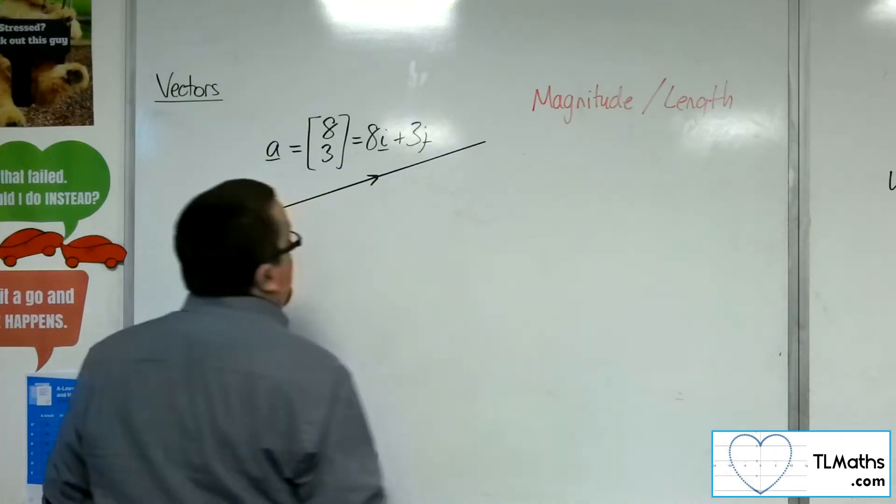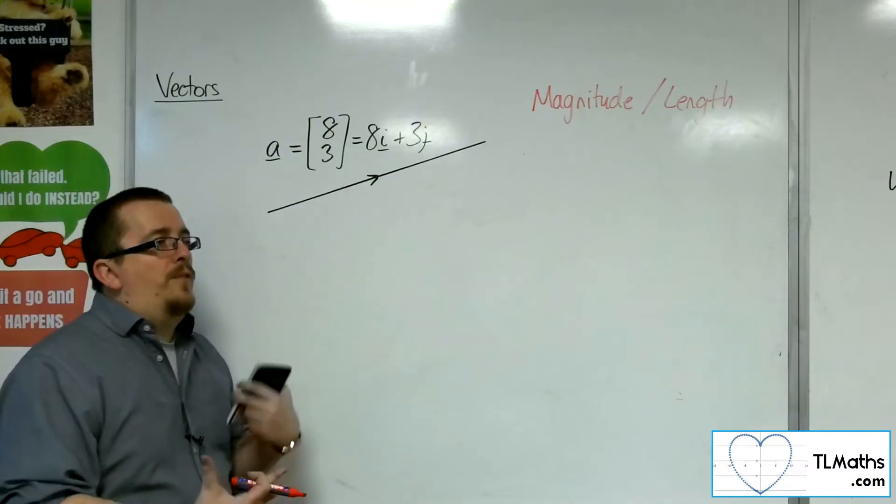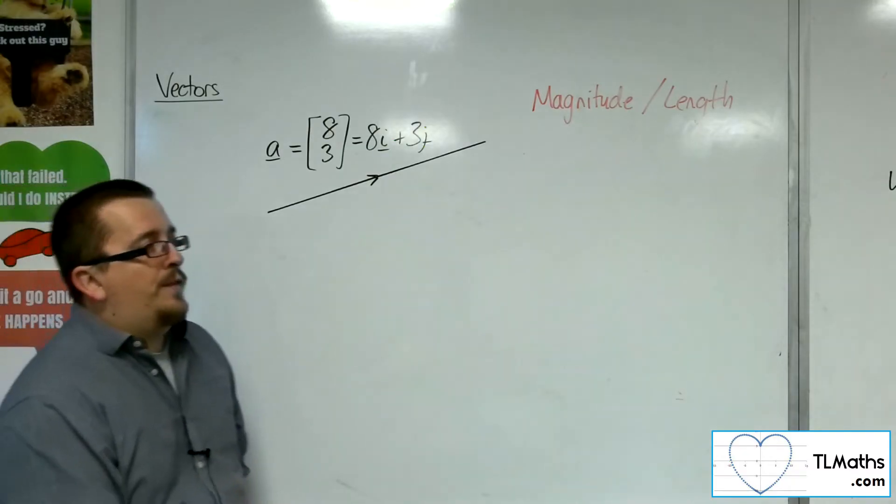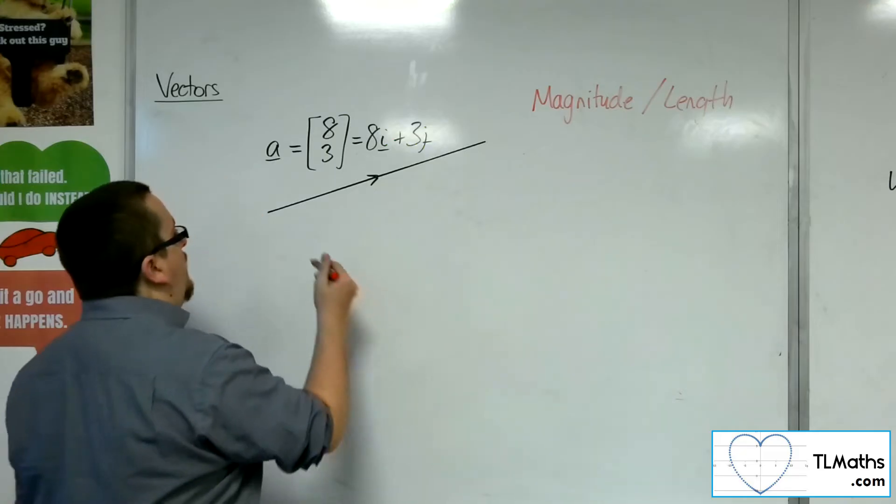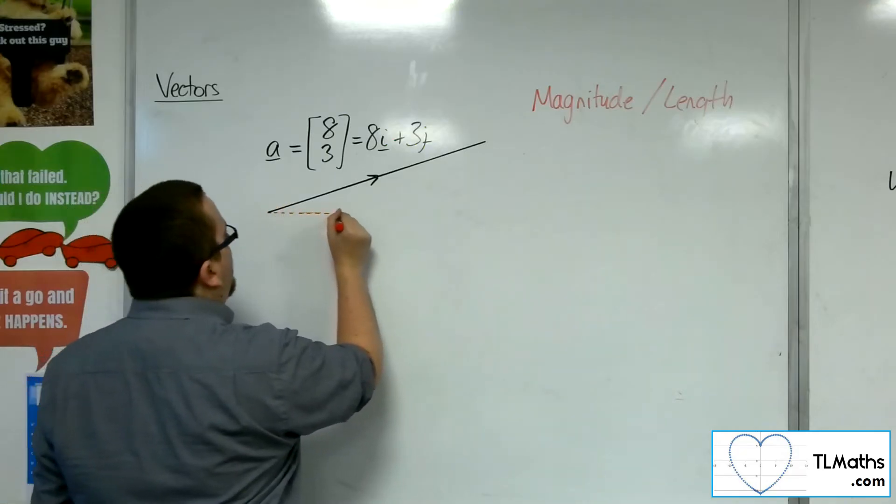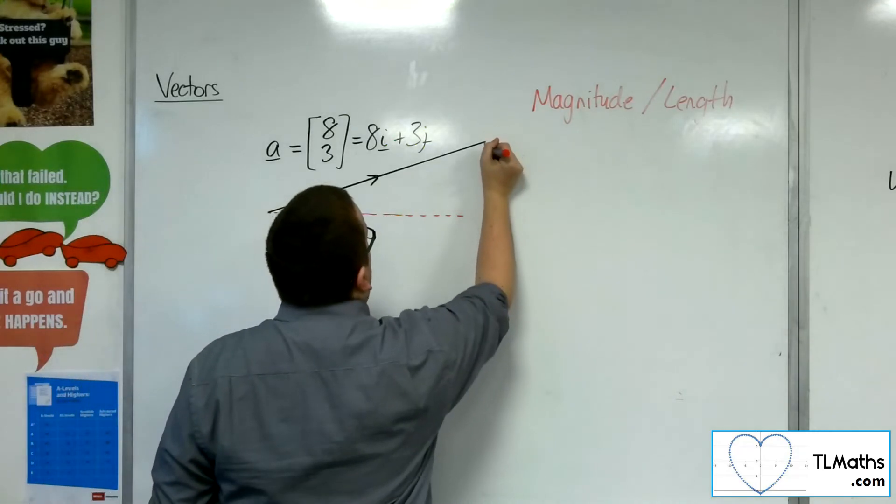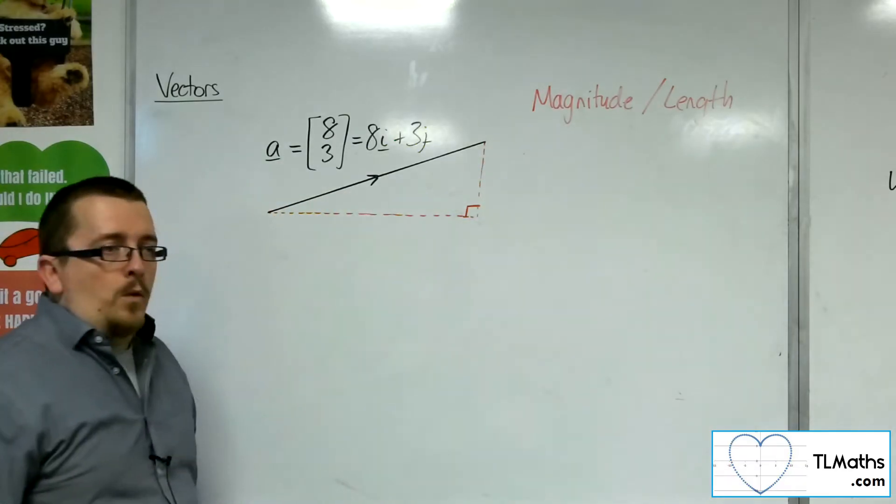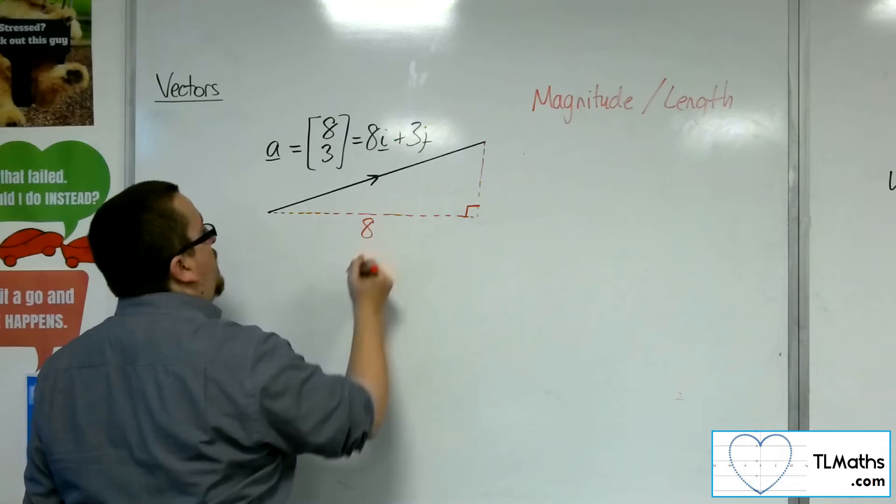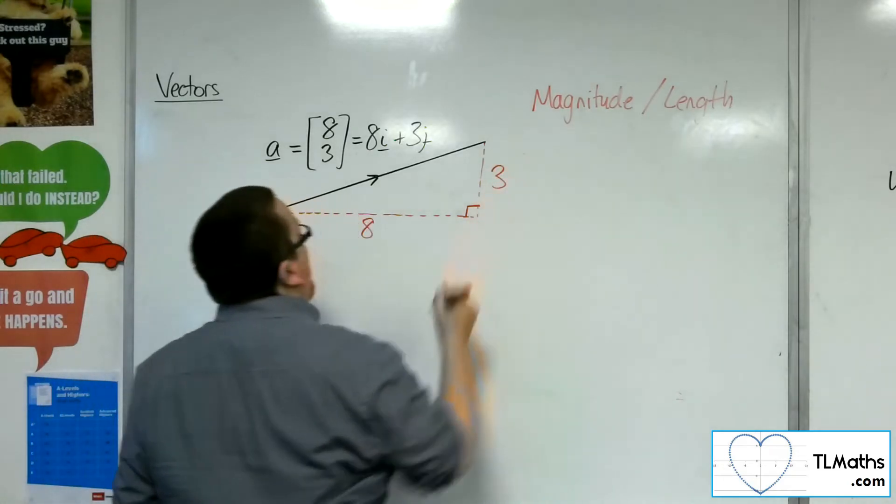So how could I do that? Well, what you need to think about with vectors is that because you've got this instruction about going 8 along the x-axis, 3 up the y-axis, you can always consider a vector as a right-angled triangle, where we have 8 in this case as the base, and 3 as the height.